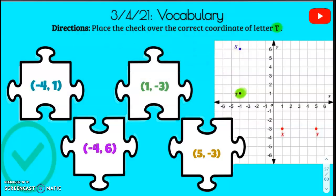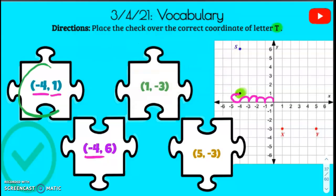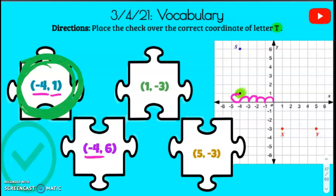Let's find the first coordinate: one, negative two, negative three, negative four. So it'll be negative four, and then positive one. There it is — it's going to be this first one. All you have to do is put your check over the blue. That's it for the vocab — great job!